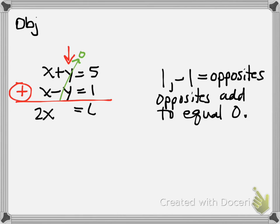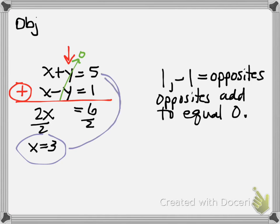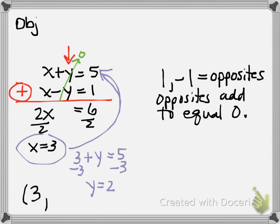This equals 6, and then we continue to solve just by dividing both sides by 2, and we get x equals 3. We take that value and plug it back into either original equation, and we solve for the other variable. So x is 3 plus y equals 5, and using opposite operations, y equals 2. The solution is (3, 2). Check: 3 plus 2 equals 5, and 3 minus 2 equals 1. Both work.